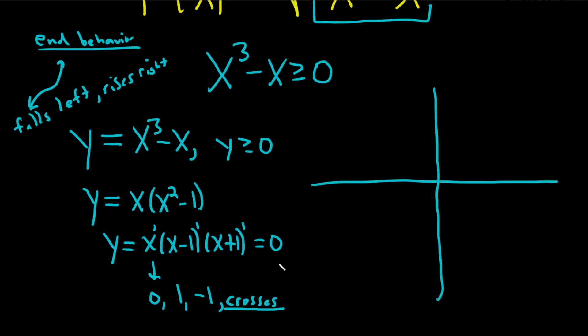So now let's put our x-intercepts on the graph. So we have 0, 1, and negative 1. And we know it falls left and rises right. So it must look like this. It crosses at negative 1, because we said it crosses. It goes up. How high does it go? We don't know. And it crosses at 0, and it crosses at 1.